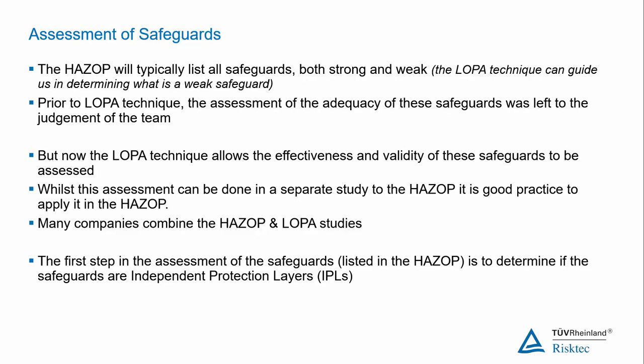The HAZOP will typically list all safeguards, both strong and weak. The approach is to list everything that is documented — even safeguards that are not good — because if you don't list them, a reviewer might say you missed a safeguard. All safeguards that are installed should be listed, fully recognizing that some are good enough and some are not so good.